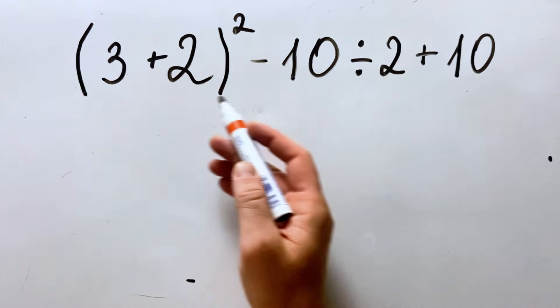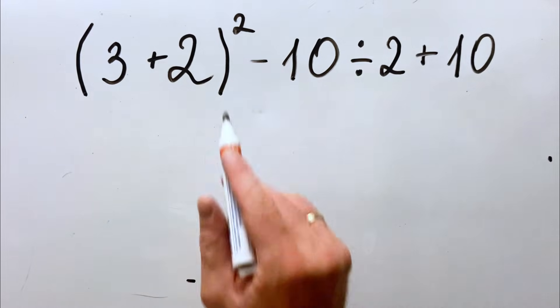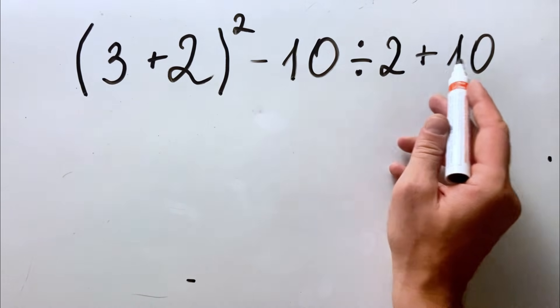Hello everyone! Today we have the following equation: 3 plus 2 all squared minus 10 divided by 2 plus 10.